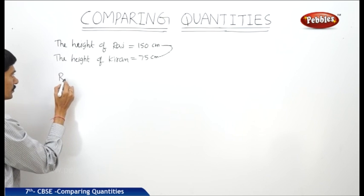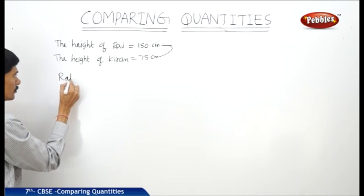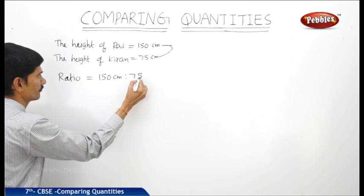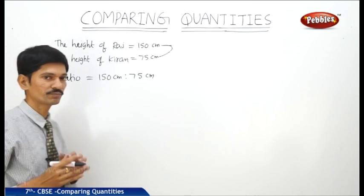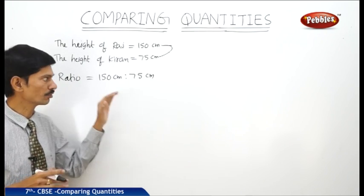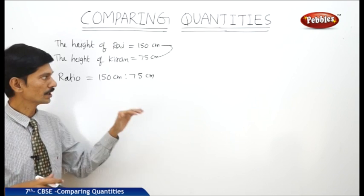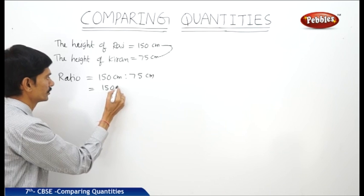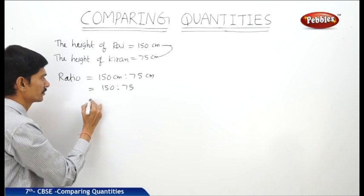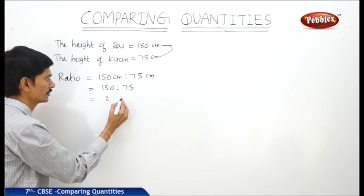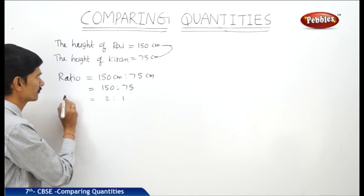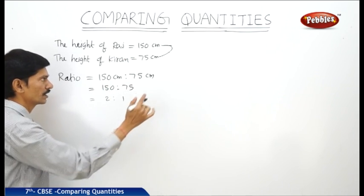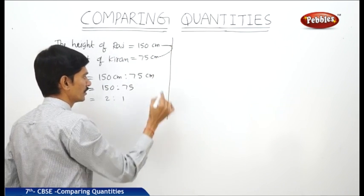The ratio of the two heights: 150 centimeters is to 75 centimeters. While comparing any two quantities, the two quantities must be in the same units — only then can the quantities be compared. So 150 is to 75: since 75 twos are 150 and 75 ones are 75, the ratio of the heights of Raj and Kiran is 2 is to 1.